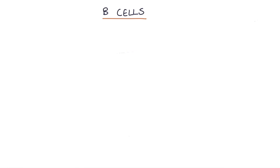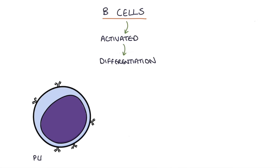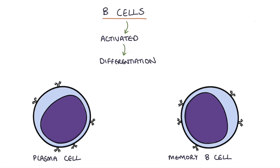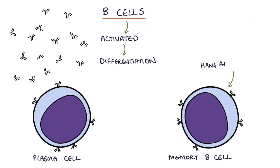Once a B cell encounters the antigen that matches its antibody, it becomes activated and undergoes differentiation, becoming either a plasma cell or a memory B cell. Plasma cells produce vast amounts of their specific antibody, and memory B cells hang around for years as part of the immune memory so that if they're needed again, they can be quickly activated.